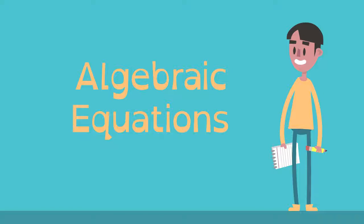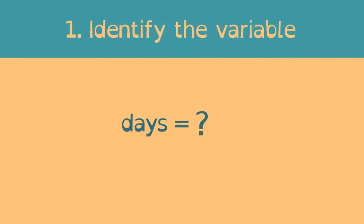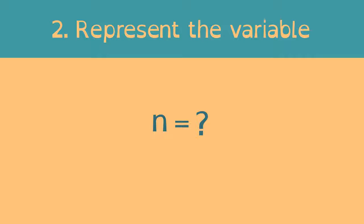He can write an algebraic equation in two simple steps. The first step is to identify the variable, the number of days until six cups remain. The second step is to represent the variable with a suitable letter, like n, for number of days.